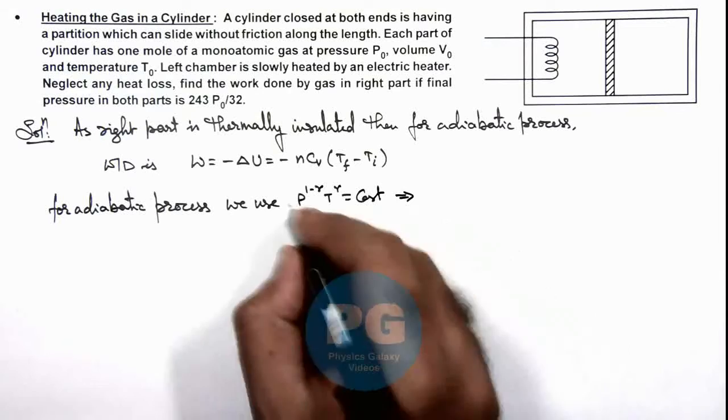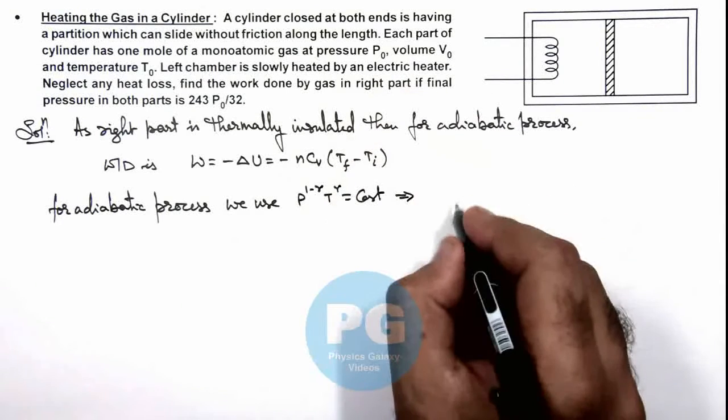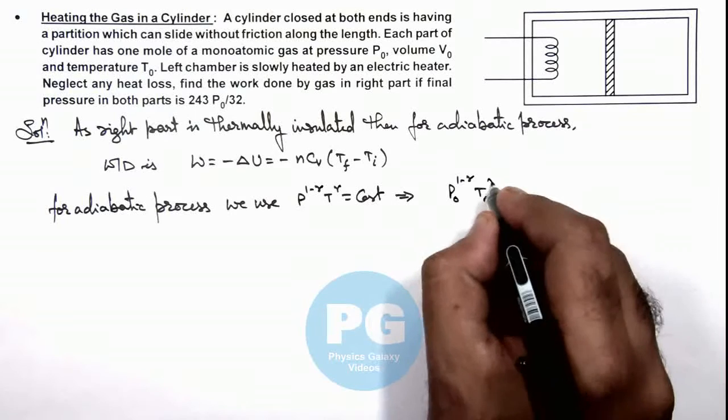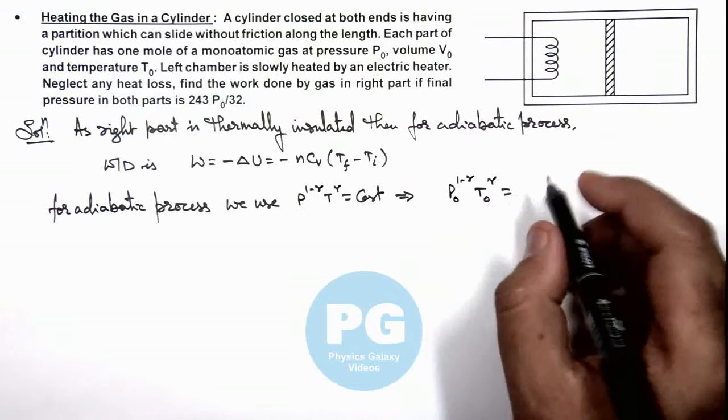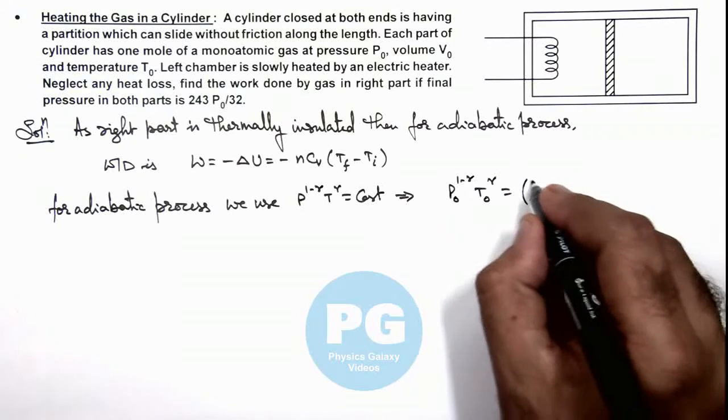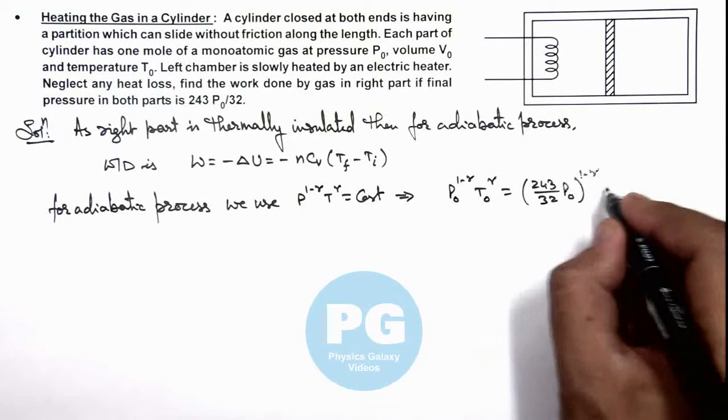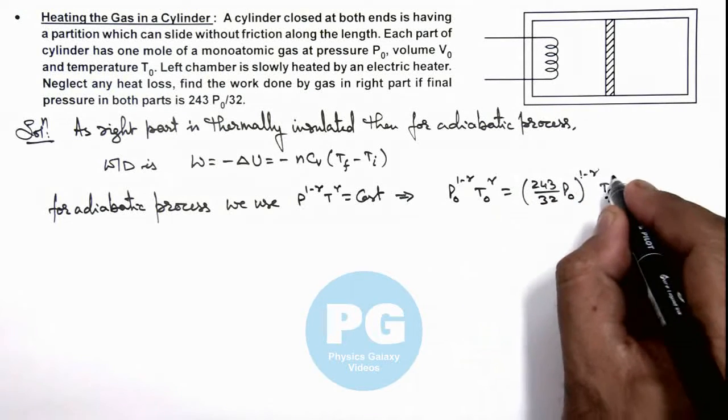This implies here we can write initial pressure p_not to power (1 minus gamma) times initial temperature t_not to power gamma is equal to final pressure (243/32) p_not to power (1 minus gamma) multiplied by t_final to power gamma.